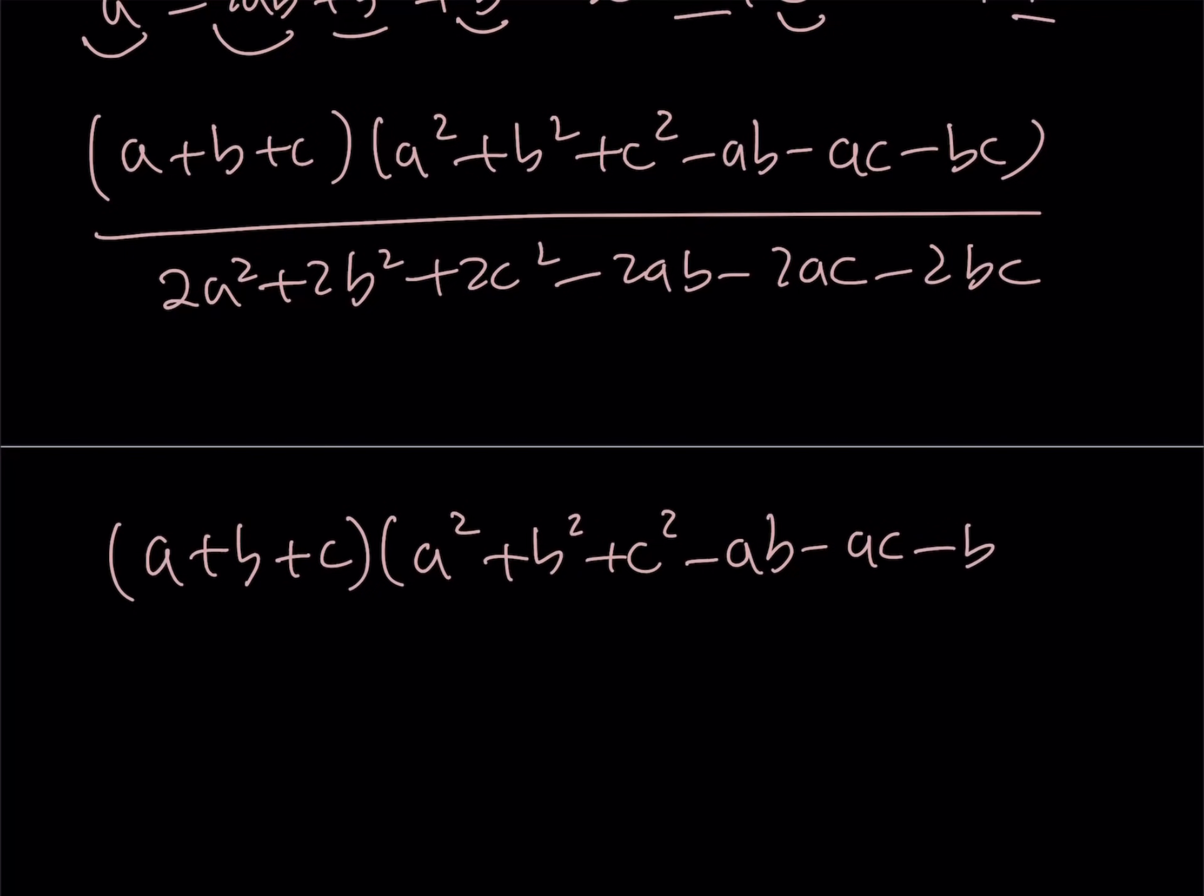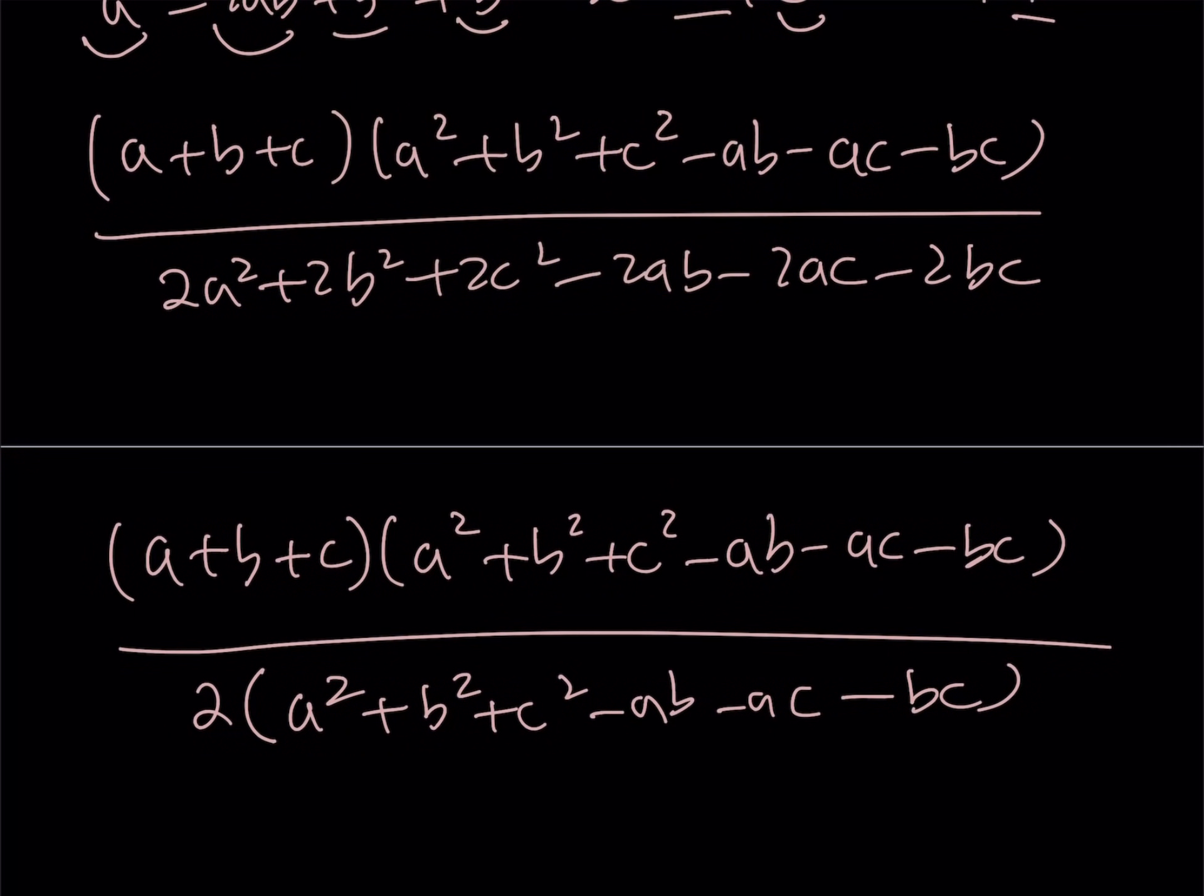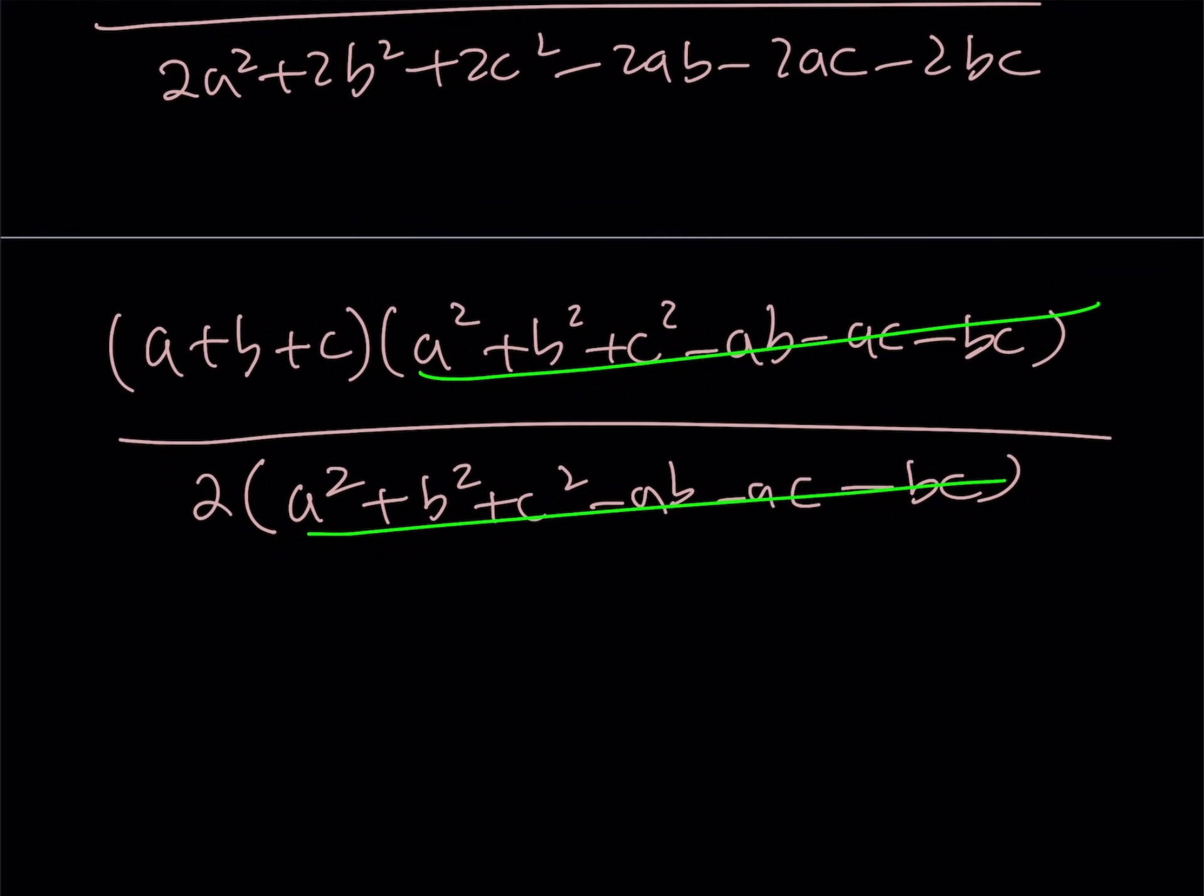So, what I can do here is I can basically just pull out a 2 and I'm going to be getting one of the factors in the numerator, which is super duper nice. So, I can just factor out this gigantic term and I end up with a plus b plus c divided by 2.